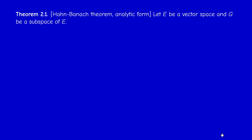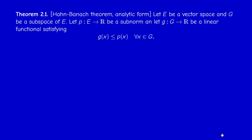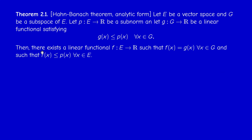Now we are ready to state the general analytic form of the Hahn-Banach theorem. We have a vector space E, a subspace G of E, a sub-norm P, and a linear functional g defined only on G satisfying the inequality g(x) ≤ P(x) for all x in G. If P is a norm, this inequality means g is continuous. The conclusion is: there exists a linear functional F defined on the whole space E that extends g and still satisfies F(x) ≤ P(x) for all x in E. The proof will be given in the next video.